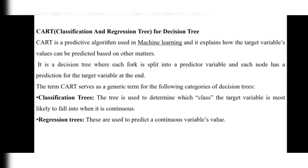The CART algorithm is a predictive algorithm used in machine learning. It explains how the target variable's values can be predicted based on other variables. It is a decision tree where each node splits on a predictor variable, and each leaf node has a prediction for the target variable at the end.